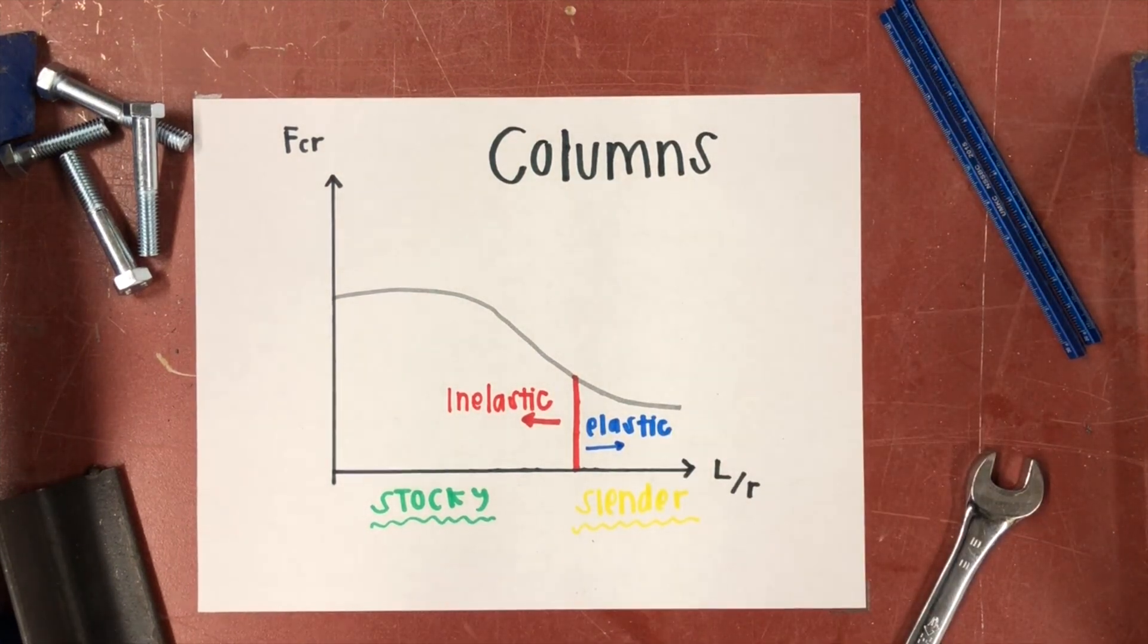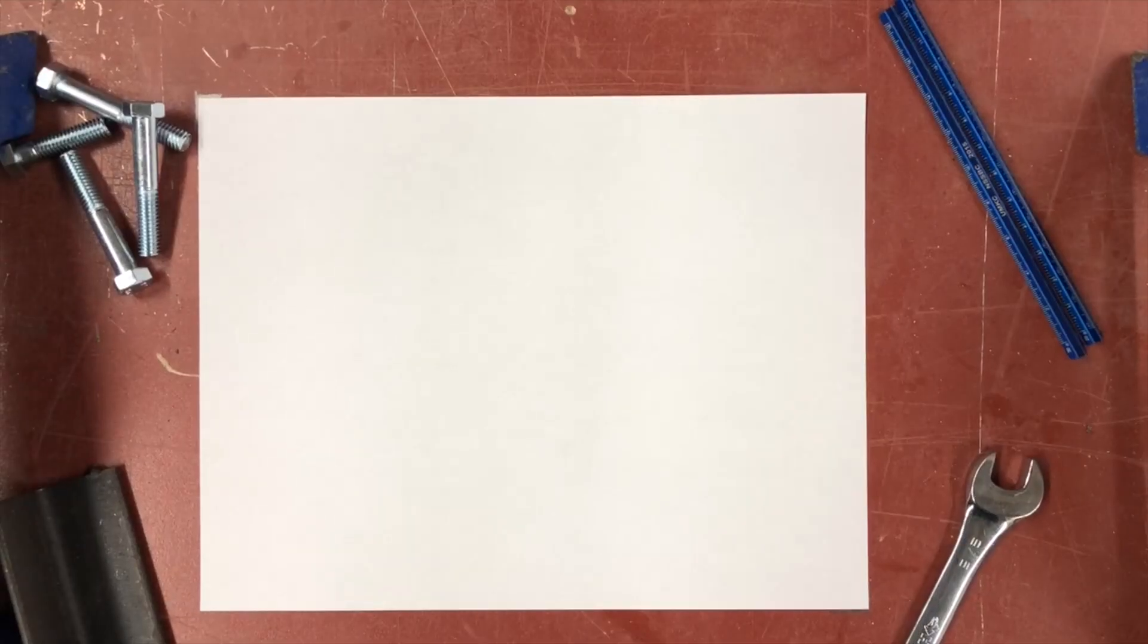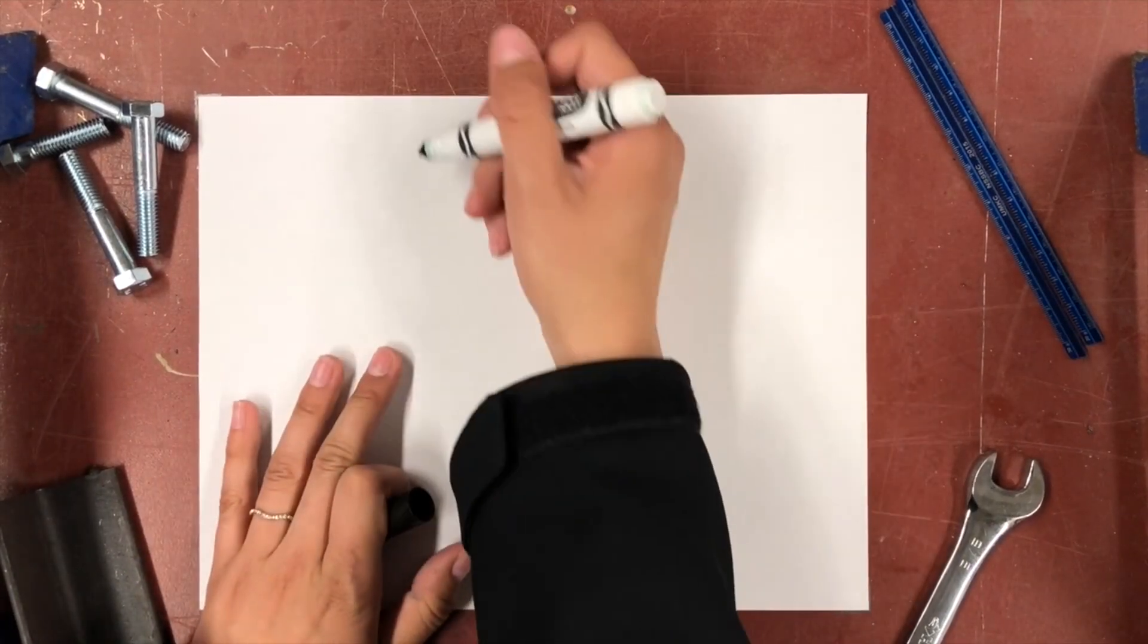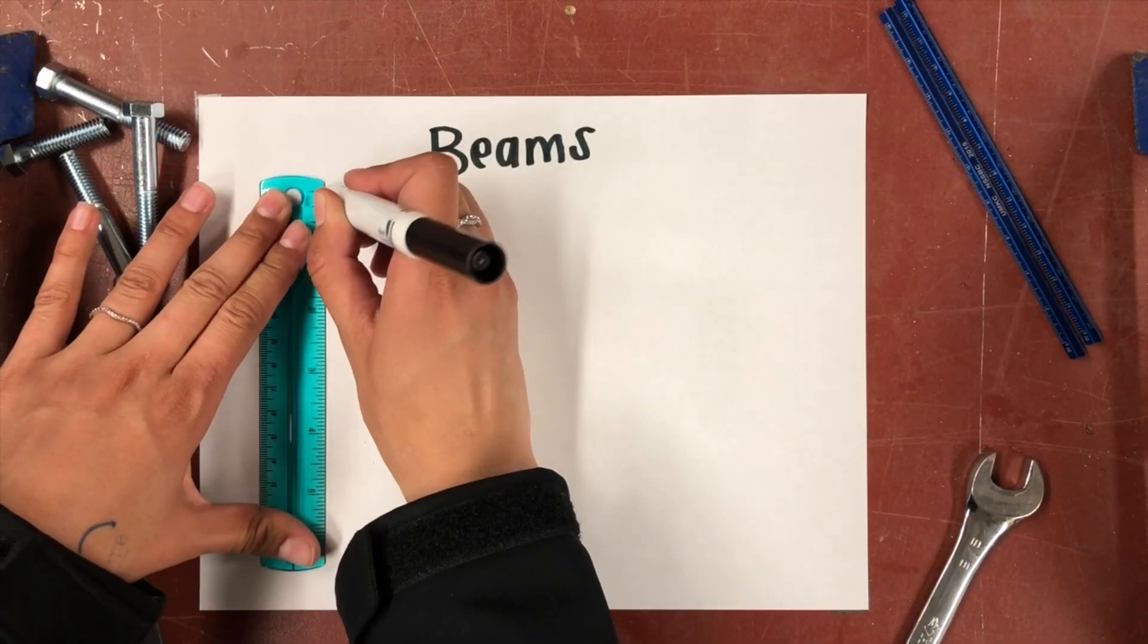This same behavior can be, you know what, I've said behavior too much. Our new word is attitude. This same attitude can be shown in beams too. And I think the graph thing worked well. Let's do that again.